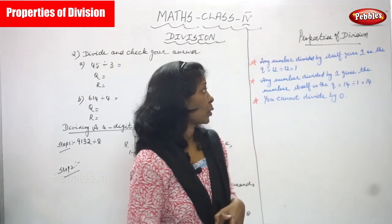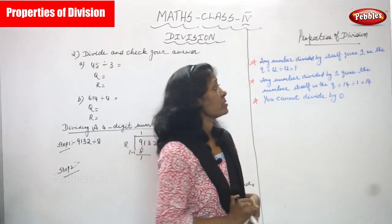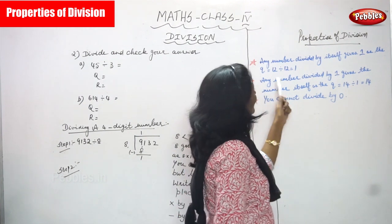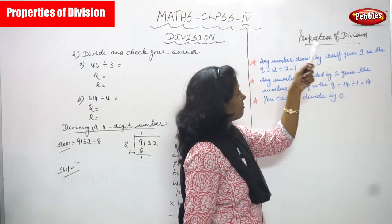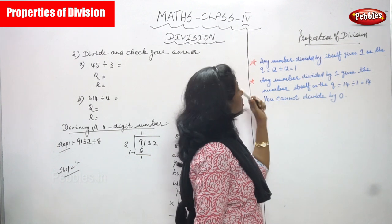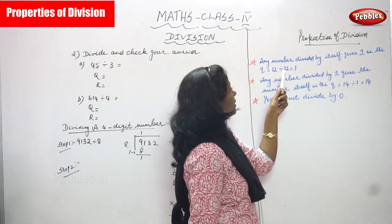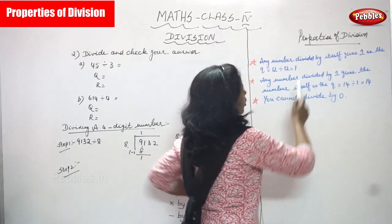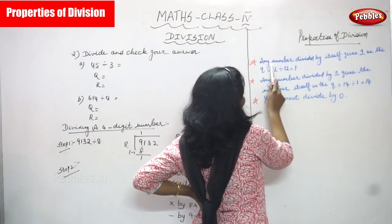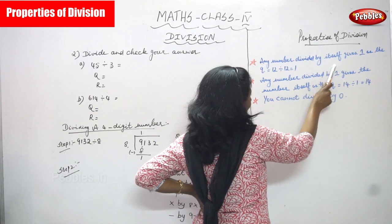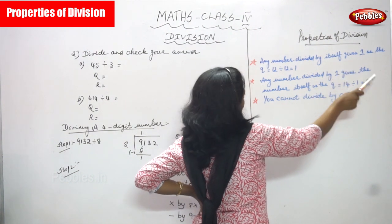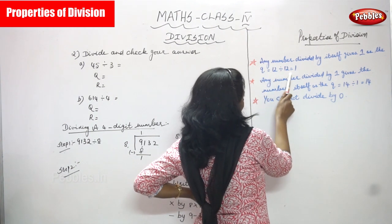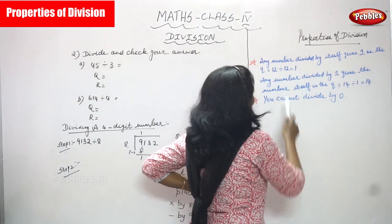Now we are going to see the properties of division. The first property: any number divided by itself gives 1 as the quotient. For example, 12 divided by 12 is equal to 1. Q means quotient.